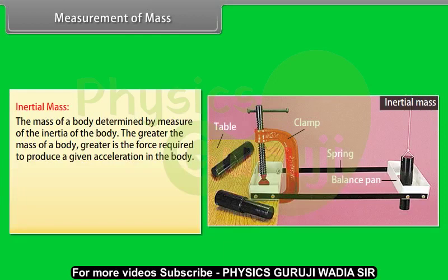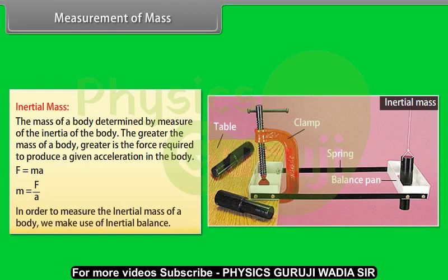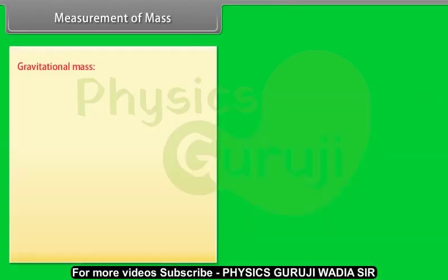Inertial mass: The mass of the body is determined by measure of the inertia of the body. The greater the mass of a body, greater is the force required to produce a given acceleration in the body. F equals MA, or M equals F upon A. Thus a very heavy body has a larger inertial mass than a light body. In order to measure the inertial mass of a body, we make use of inertial balance.